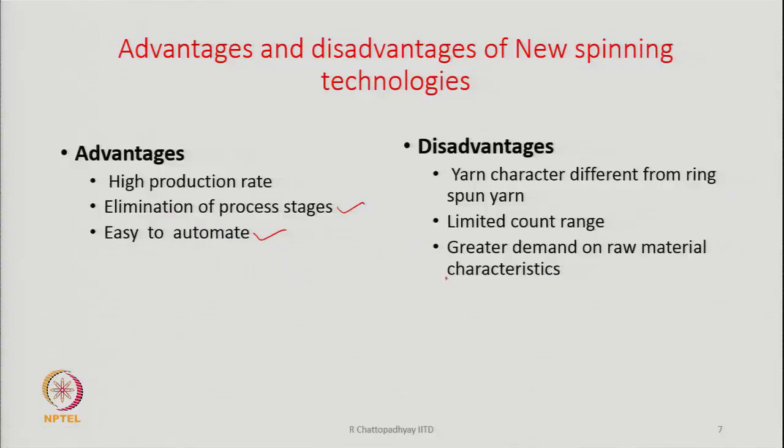But with the new spinning technologies, you will see that some of them are suitable for coarse count, some of them are suitable for medium to fine counts. That is the disadvantage we have with these spinning systems. The third one is greater demand on raw material characteristics. Ring spinning that way, as I said, is a very versatile spinning system. It can handle all types of fibers. It can produce a range of yarn counts, and the character of the yarn also is superior in many respects.